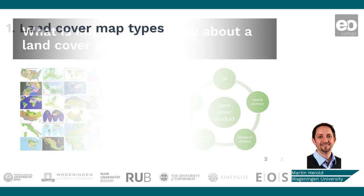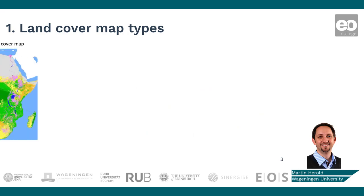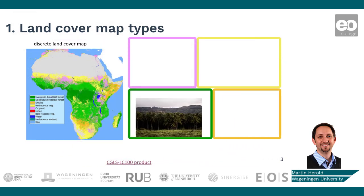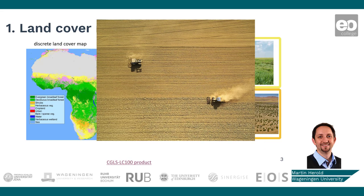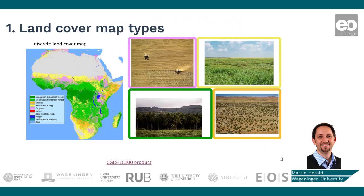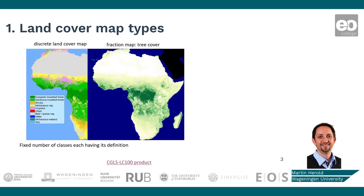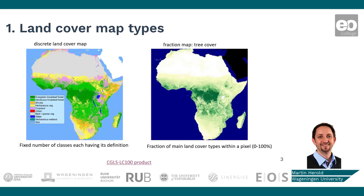There are in general different types of land cover maps. First, to the left, there's what's called a discrete land cover map where you have specific classes with certain definitions — for example, forests, shrubs, grasslands, or croplands. Or you have what's called fractional land cover maps where the classes are basically percentages, for example a tree cover fraction, giving a more detailed depiction of tree cover density at the pixel level. Both types of products are available, and in fact some land cover products have both discrete classification and fractional land cover classification.